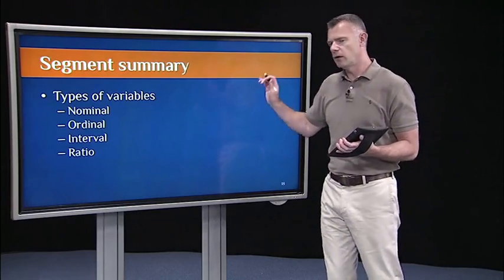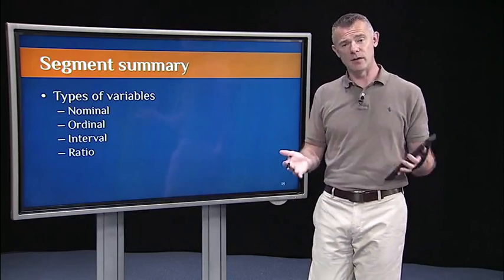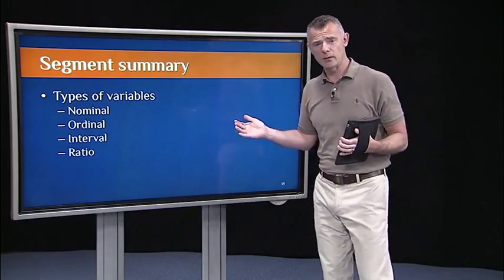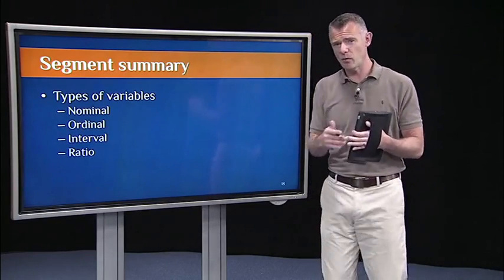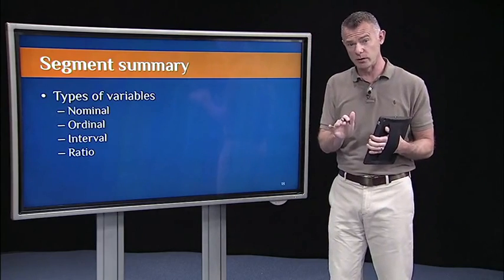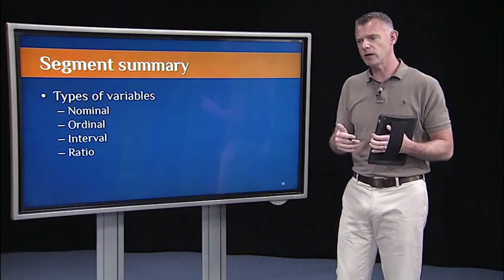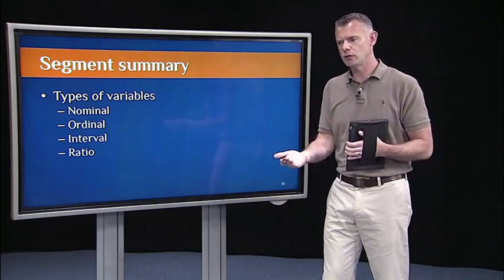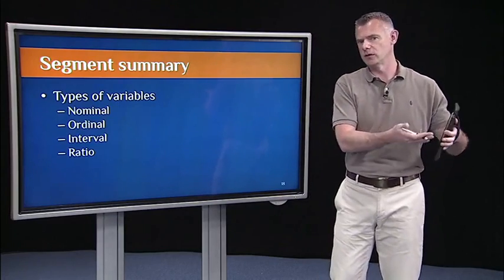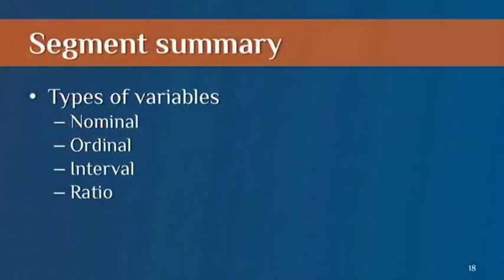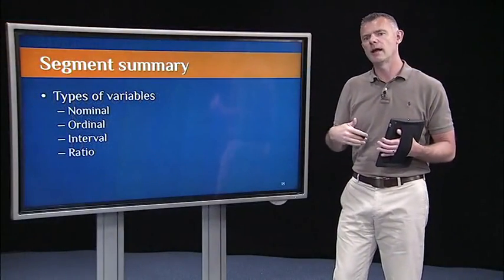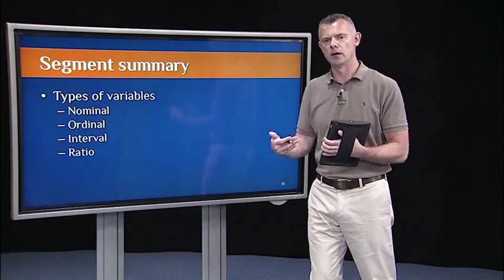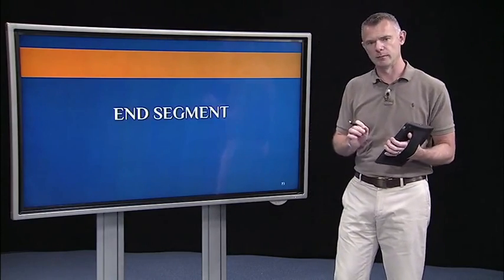So to sum up this segment, the main point is that there are different types of variables that we're going to use throughout the course, and that statisticians use to do their research. And it's really important at the outset that you always know what type of variable you're dealing with, because you can only apply certain statistical procedures to variables of certain types. So just remember that there are four different types, nominal, ordinal, interval, and ratio. And know that as you go from nominal to ratio, you're allowed to ask more and more interesting questions of your data. And that's the end of this segment.